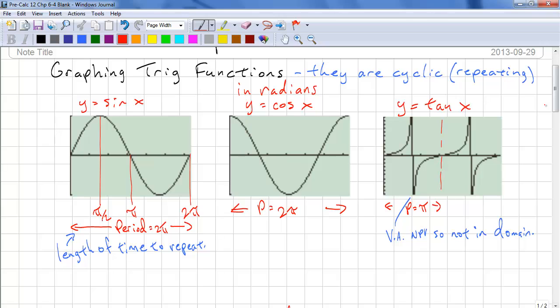Why do we have a vertical asymptote for tangent? If we look at tangent, you should recall that tangent theta or x is y over x, or sine theta over cos theta. So the NPVs occur when cosine theta equals 0.